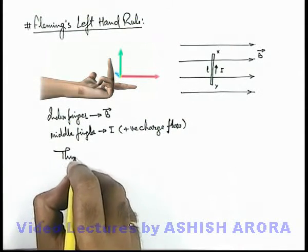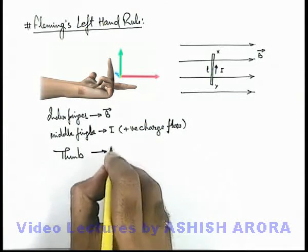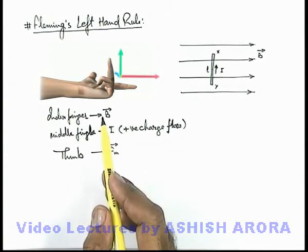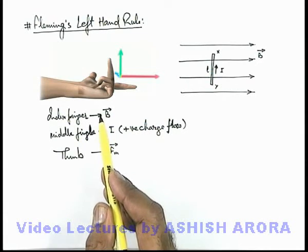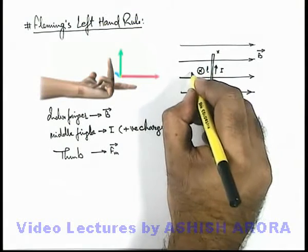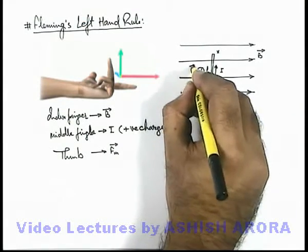Then we can say our thumb will give us the direction of magnetic force. And here in this situation you can see that our thumb is pointing in inward direction, so the magnetic force acting on it will be in inward direction.